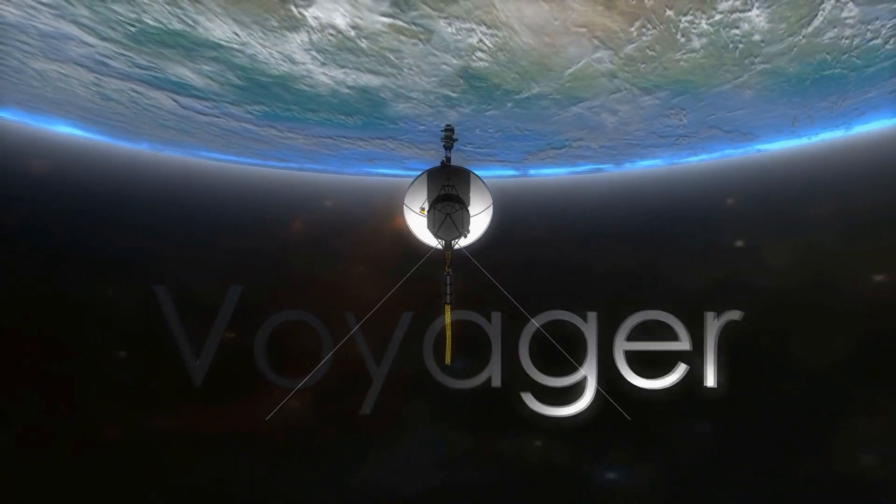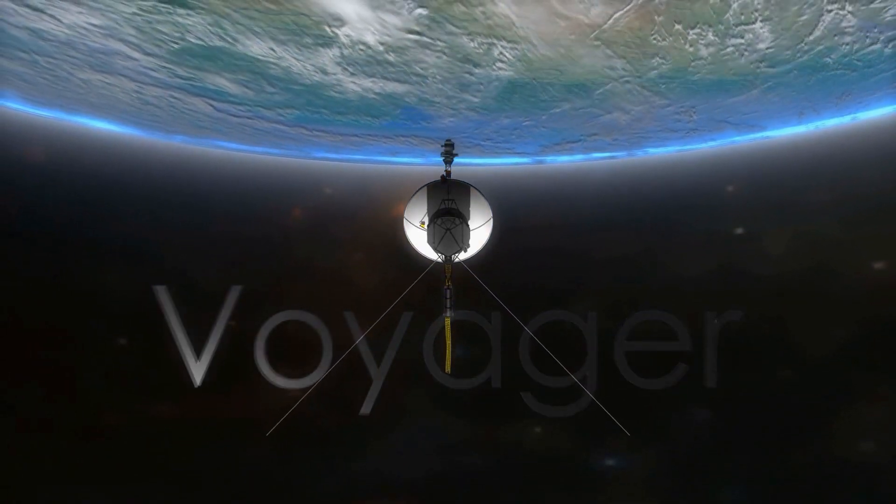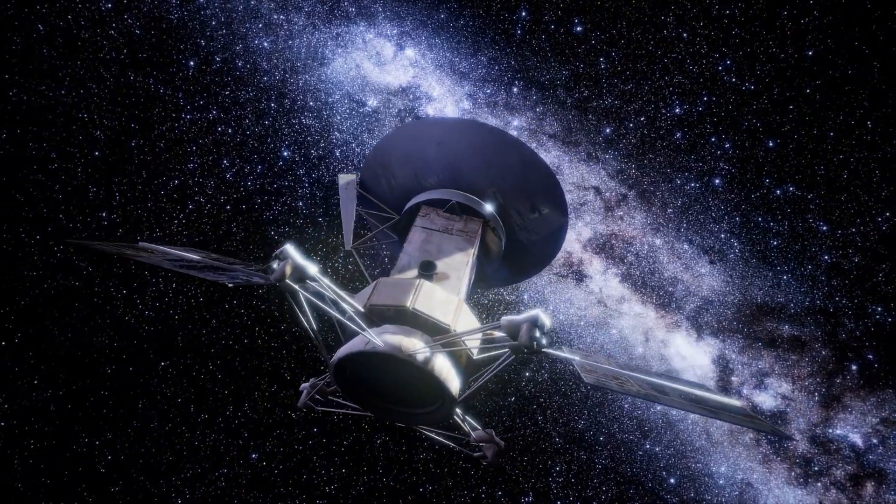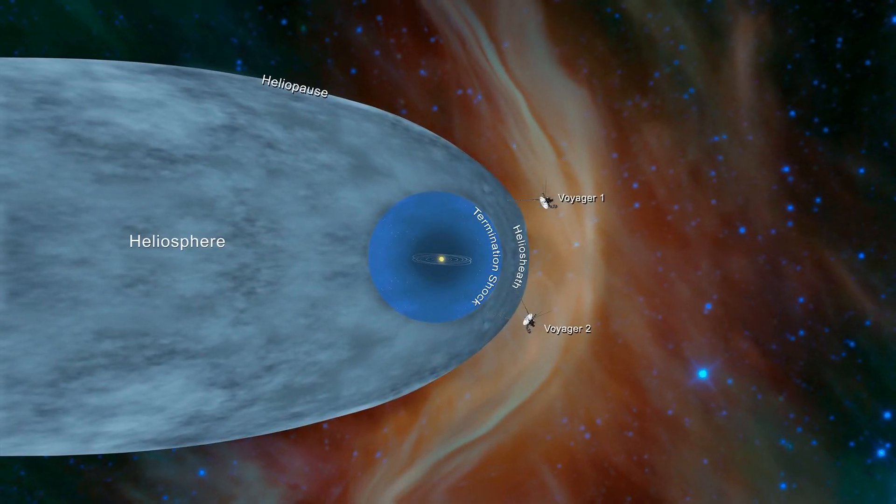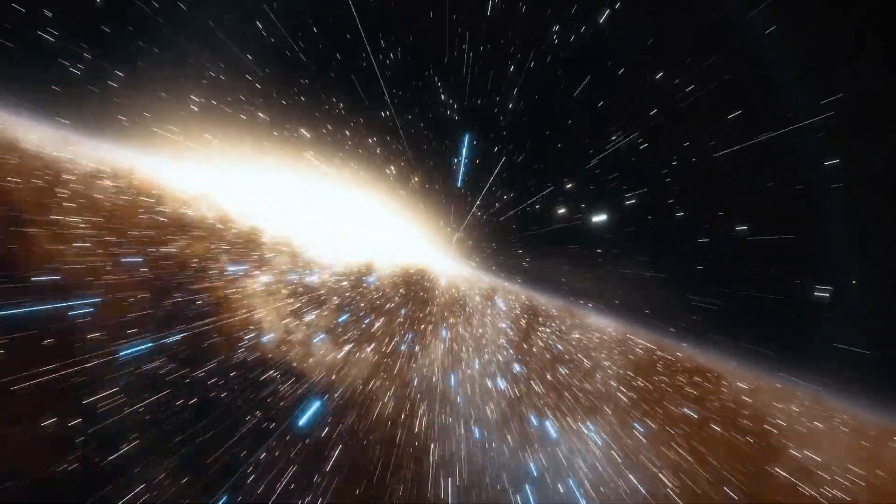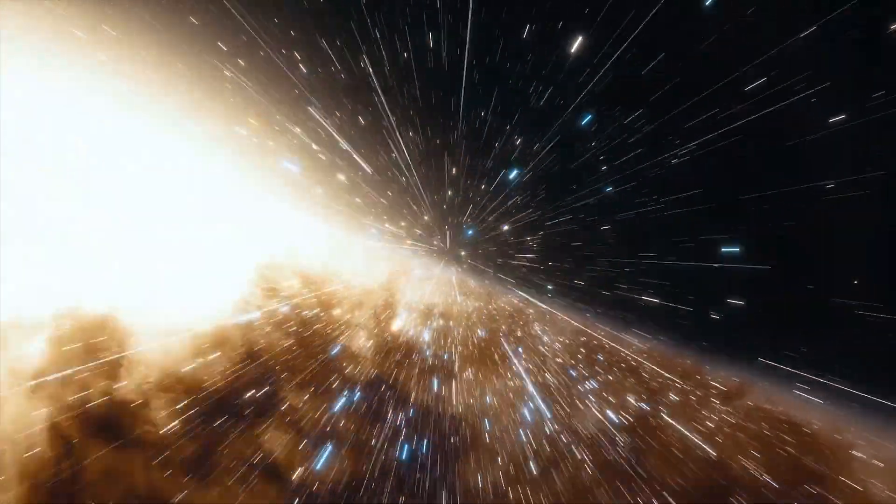Fast forward to August 25th, 2012. Voyager 1 made history by crossing the heliopause, the boundary where the solar wind collides with the interstellar medium. For the first time, humanity reached interstellar space.